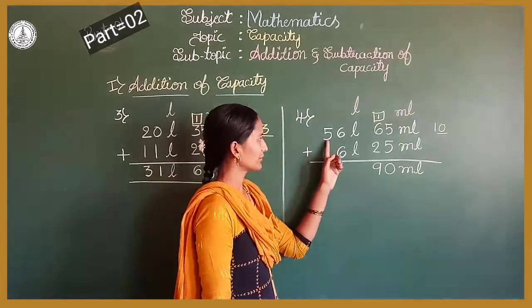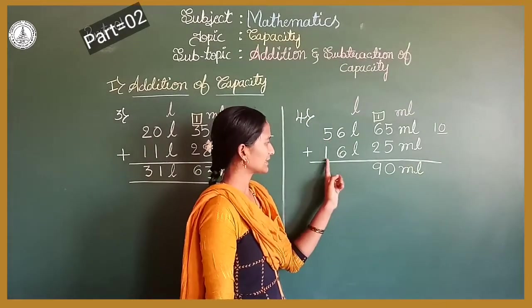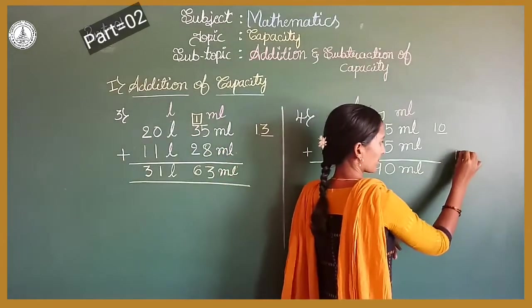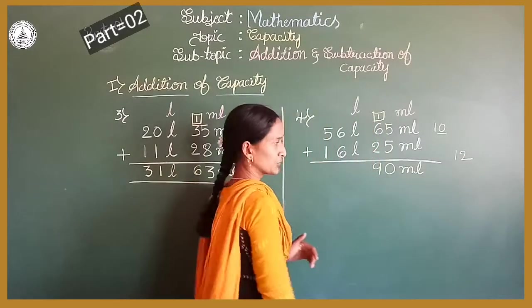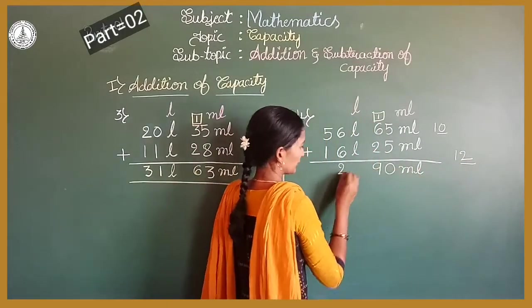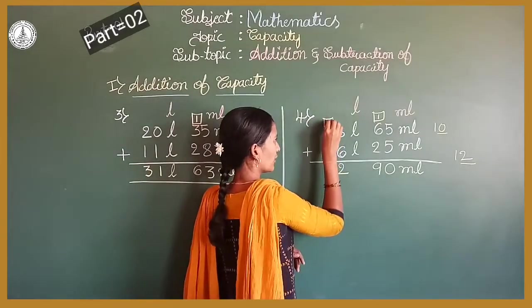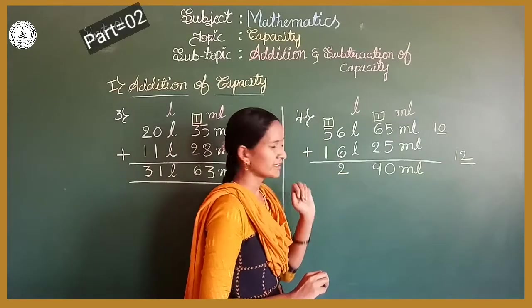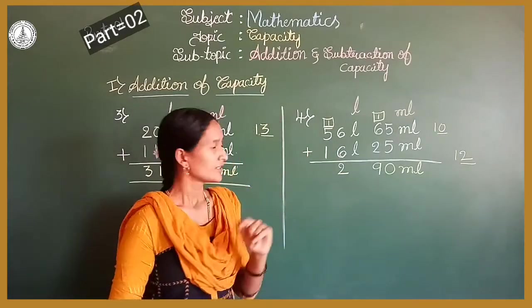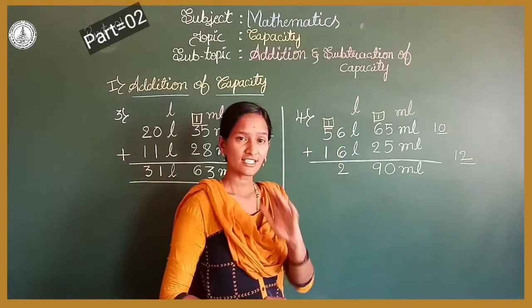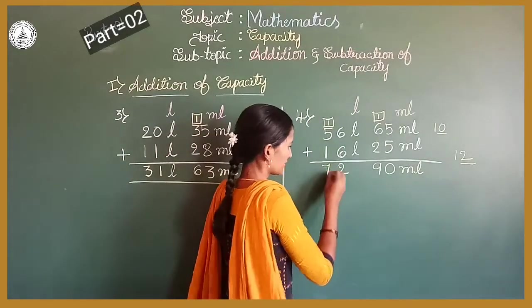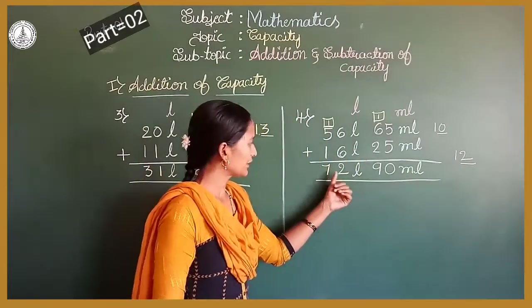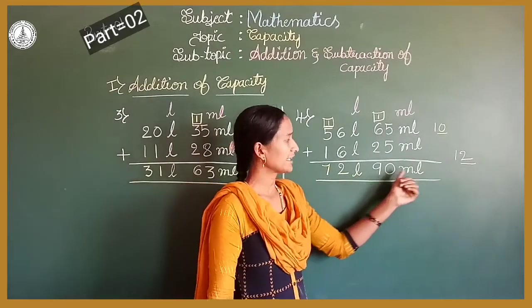Now come to the litre part. 56 litres plus 16 litres. 6 plus 6 is 12. Write 2 here and carry 1 to the next column. 5 plus 1 is 6, plus the carry 1 is 7. So 72 litres. The sum is 72 litres 90 millilitres.